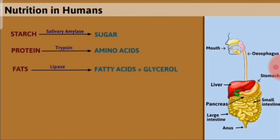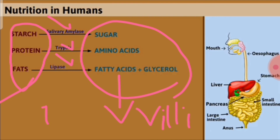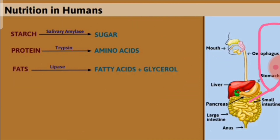In summary, in human nutrition, complex substances like starch, protein, and fat are converted by enzymes present in the digestive juices into simpler substances. These simpler substances are easily absorbed by the villi of the small intestine, enter into the blood, and through the blood they reach each and every cell where they produce energy. Thank you.